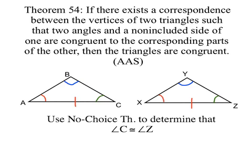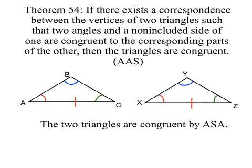The No-Choice Theorem says that the third angle of triangle ABC is congruent to the third angle of triangle XYZ. And once we've got that, we can state that the two triangles are congruent by the ASA postulate, and we've proven Theorem 54. Angle-angle-side.